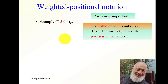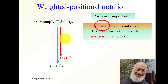Weighted positional notation: the position of the symbol in the number is important. The value of each symbol is dependent on its type and on its position in the number. For example, in this number the digit 7 has a value of 7 times 10 to the power 3, so it has a value of 7,000, because its position has a weight of 1,000. A digit 5 has a value of 5 times 10 squared, which is 500.